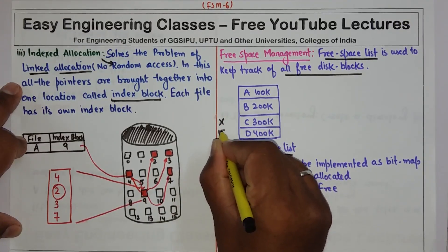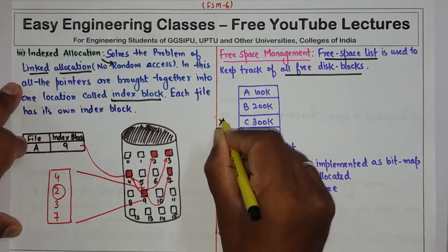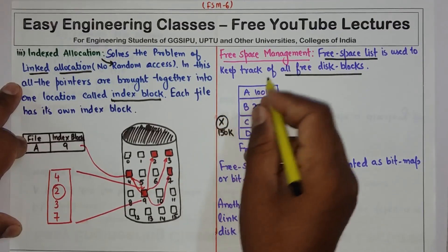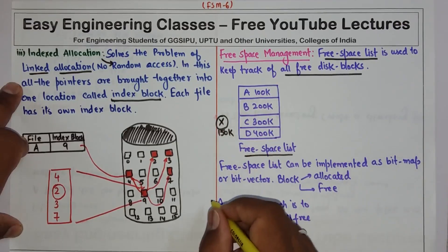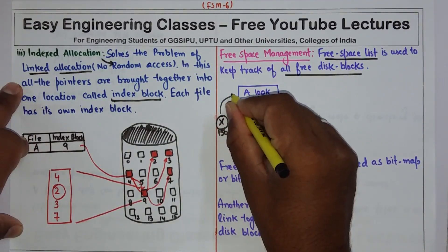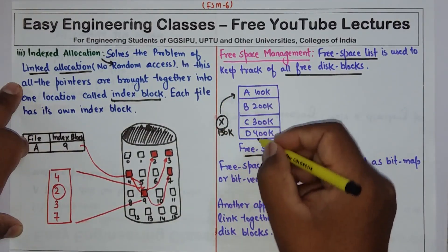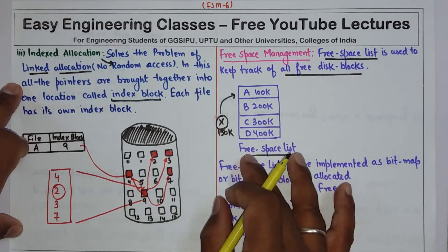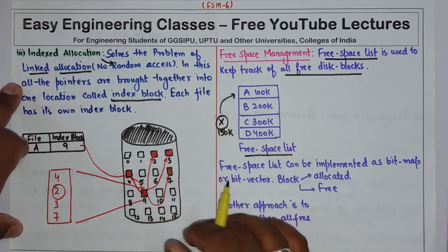What happens is this X starts seeing the spaces, or the system starts seeing the spaces in this free space list to allocate space to this file X.